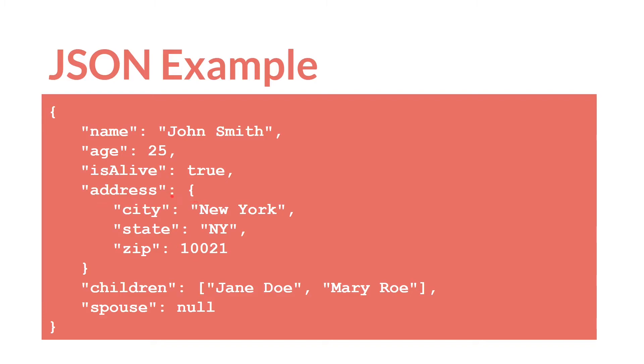We have address, colon. And then we have open brackets, closed brackets. This is an object. Where inside of this object we have keys and values as well. Two strings and a number. We have children which is an array. And then we have spouse which is the null value.